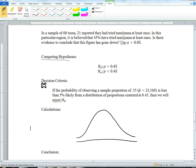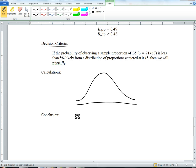We're going to decide this way. If the probability of observing a sample proportion of 0.35, which is 21/60, is less than 5% likely from a distribution of proportions centered at 0.45, then we will reject H0.